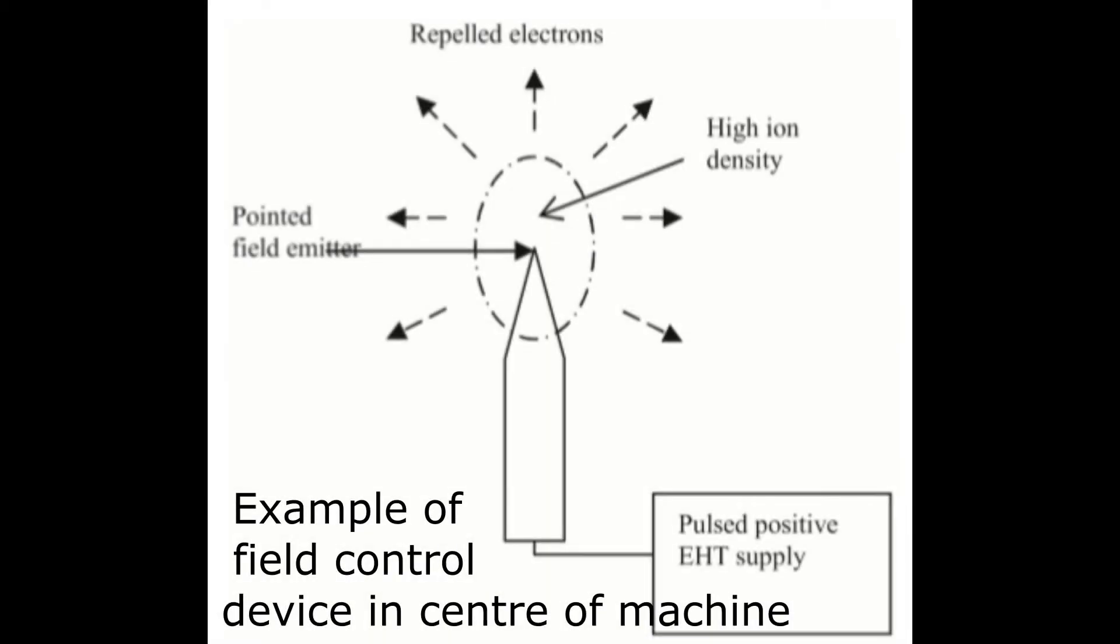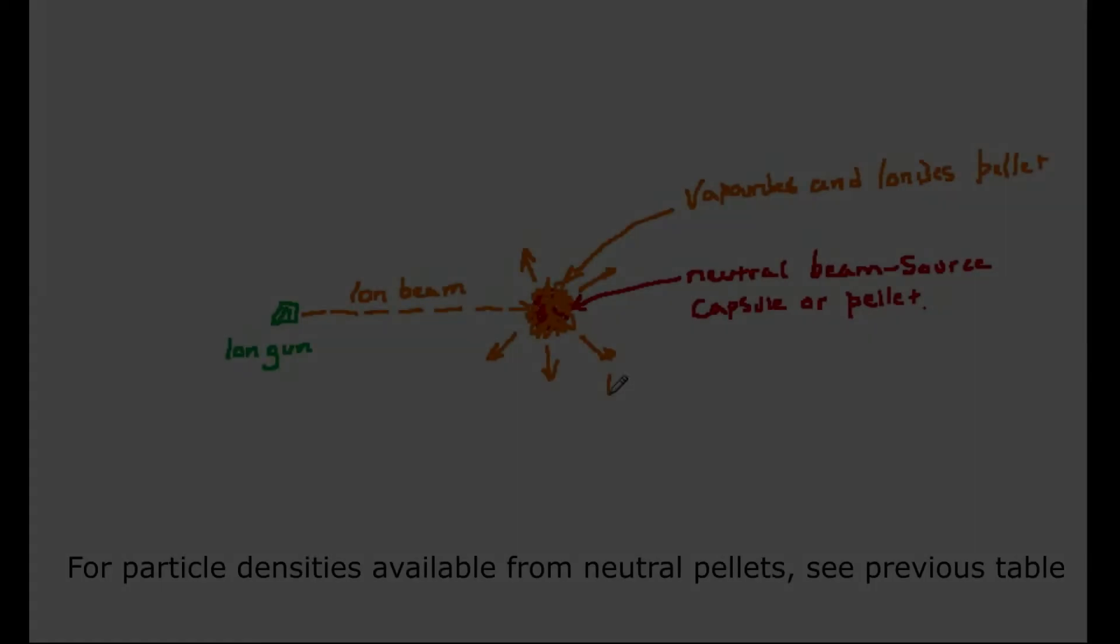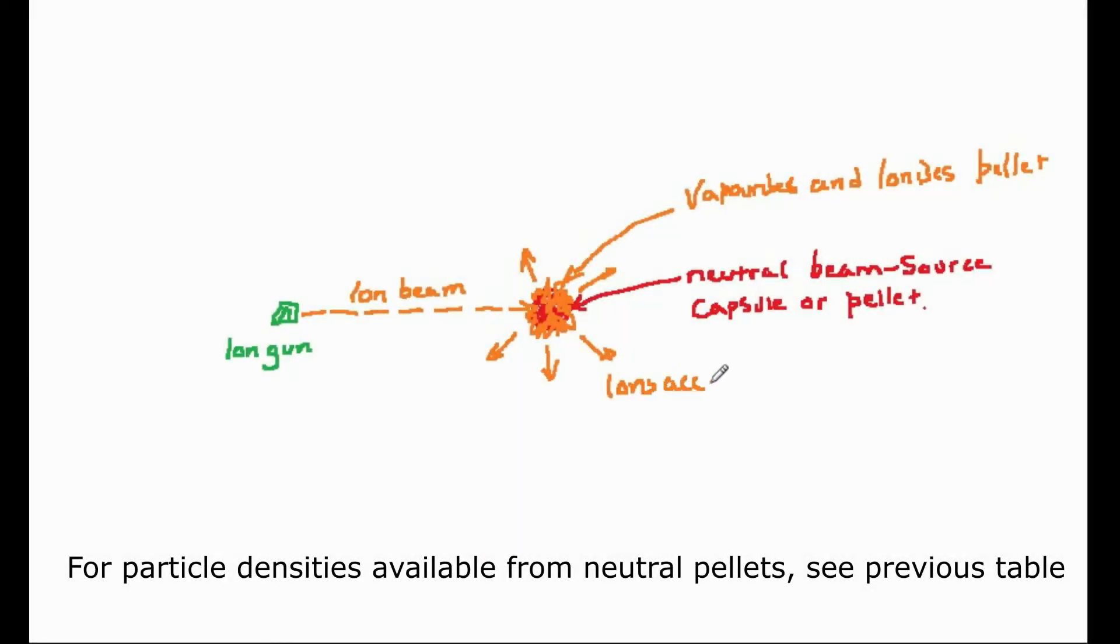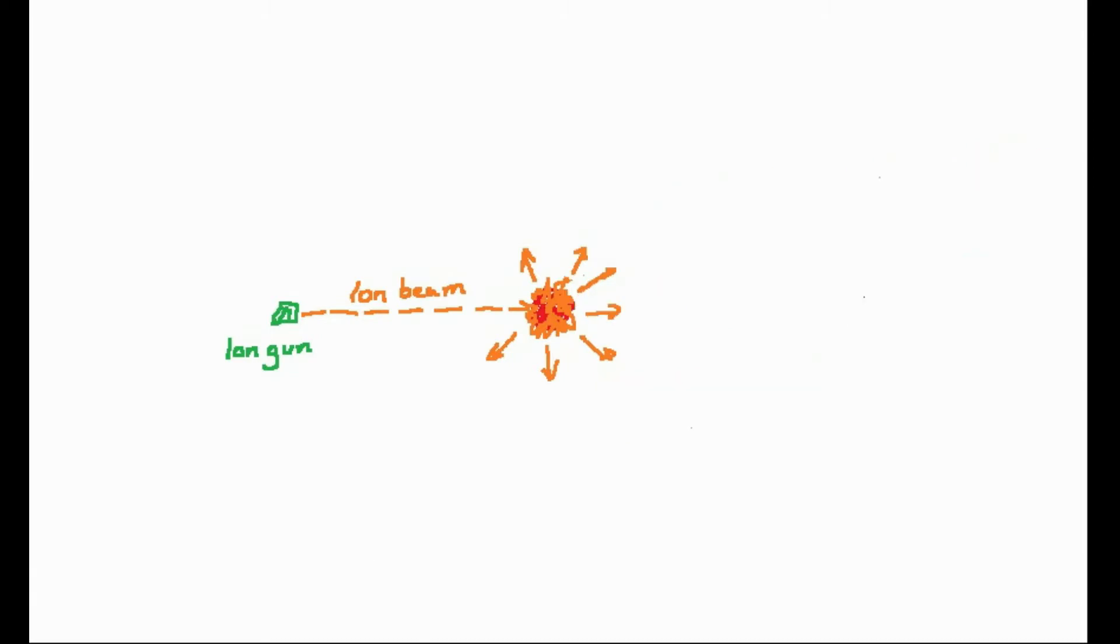Because the capsule is simply an unionised solid, liquid or gas, it can have an extremely high density, many orders of magnitude greater than an ionised plasma. When it is ionised, because of its extremely high density, the ions are extremely unstable and have a tendency to try and explode outwards. They can then be accelerated by high voltage grids.